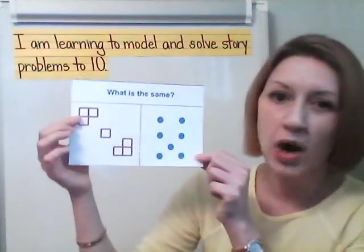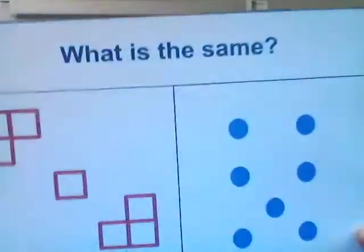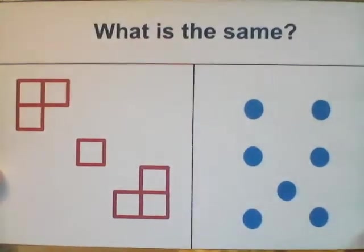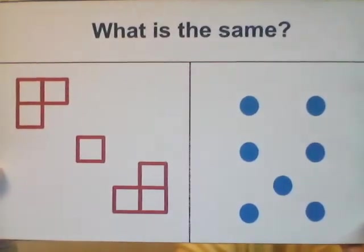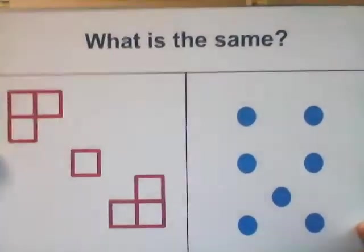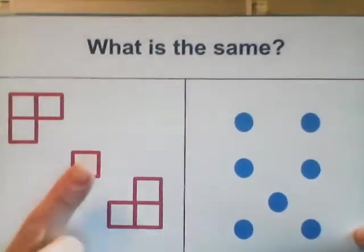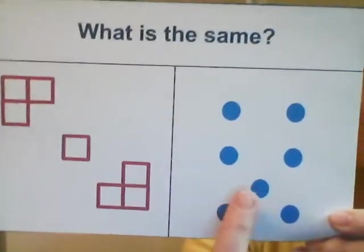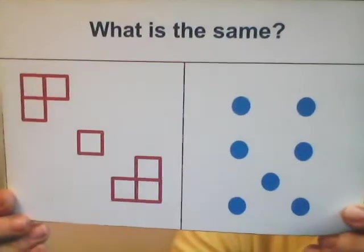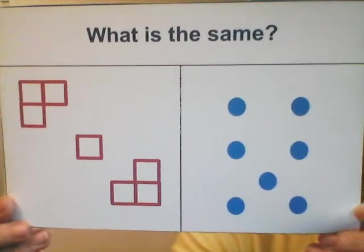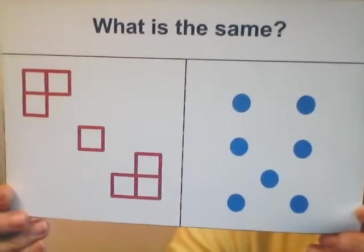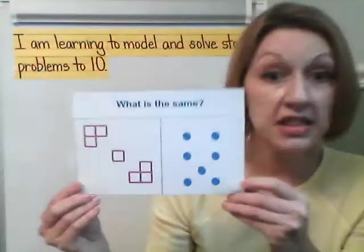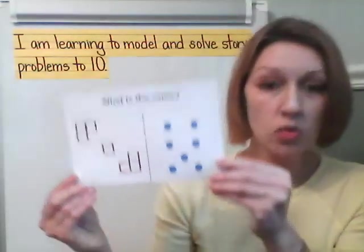I want you to look carefully. What is the same? Look very carefully. What do you notice? Do you notice three and three here and one there? I see that there are three here on this side and one in the middle. What else do you notice? Did you say that there were seven on each side? Did you notice that? Let's see if you're right.